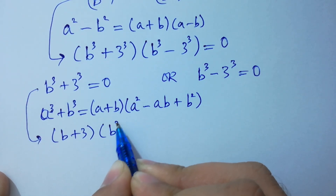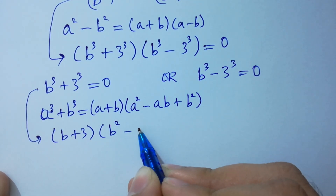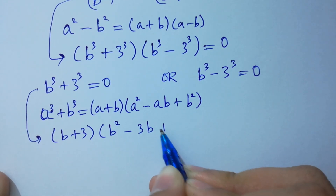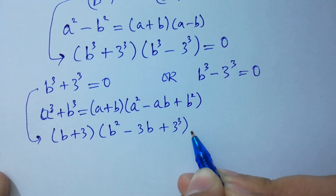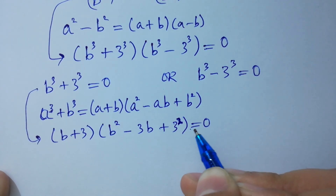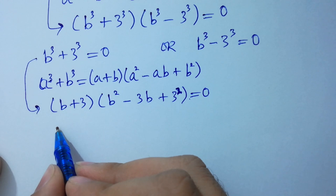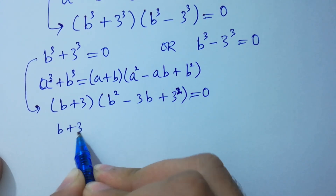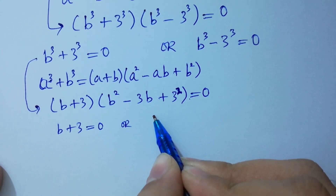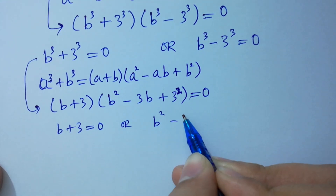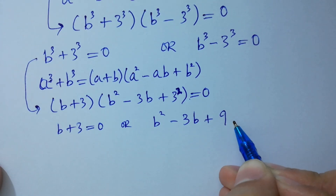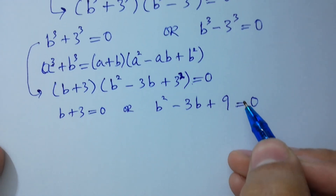Applying the formula, we get (B plus 3)(B² minus 3B plus 9) equals 0, giving us either B plus 3 equals 0 or B² minus 3B plus 9 equals 0.